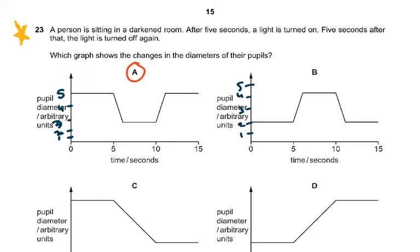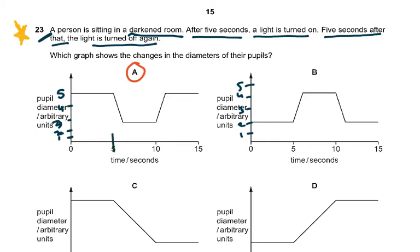Question 23 is mentioned in the examiner's report — students were able to interpret this graph. A person is sitting in a darkened room. After five seconds the light is turned on; the pupil will become smaller. Five seconds after that, the light is turned off again. You have to understand what happens between five and ten seconds.